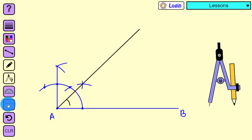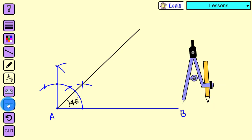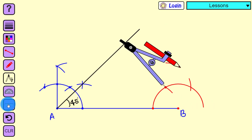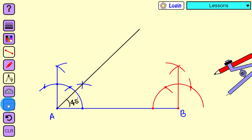This angle is 45 degrees. Let us make an angle of 90 degrees at point B. This angle is 90 degrees. Now let us draw bisectors of the 45-degree and 90-degree angles.